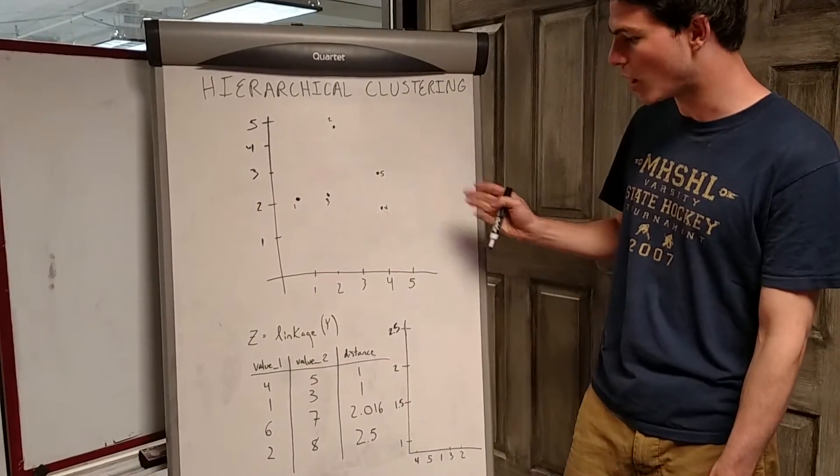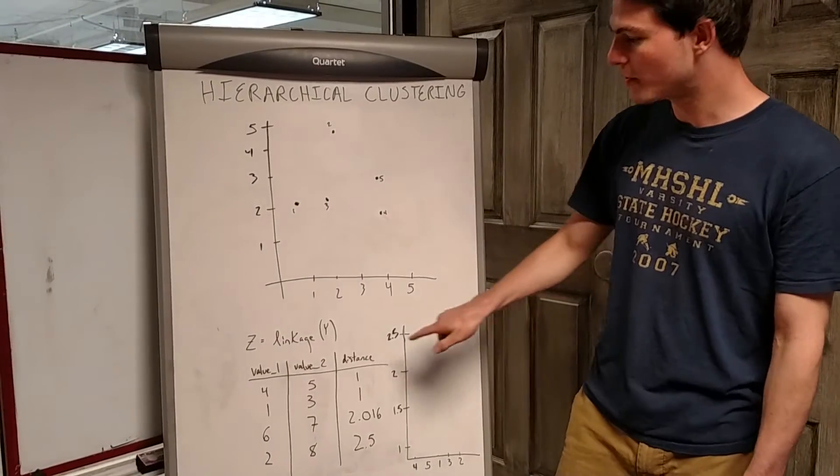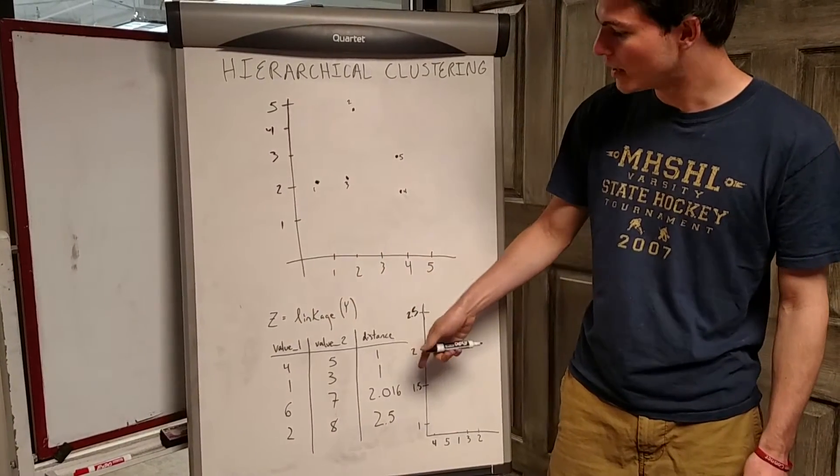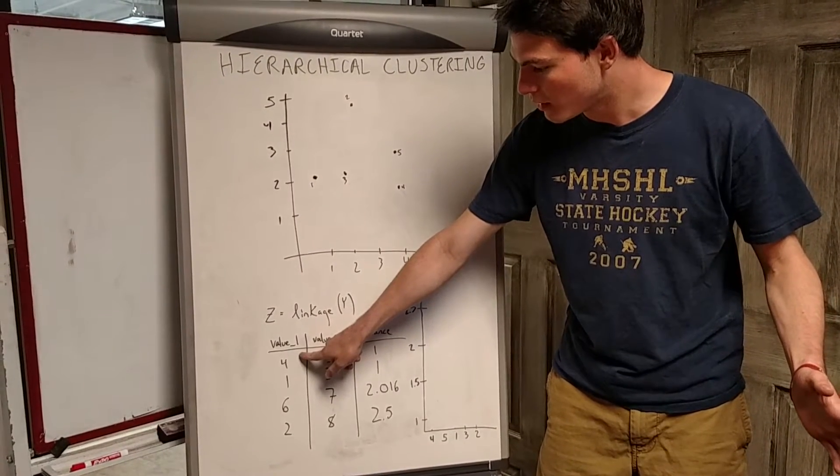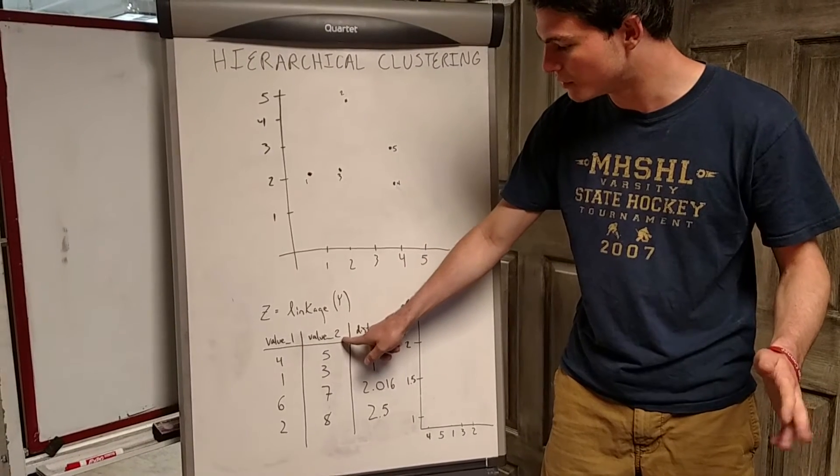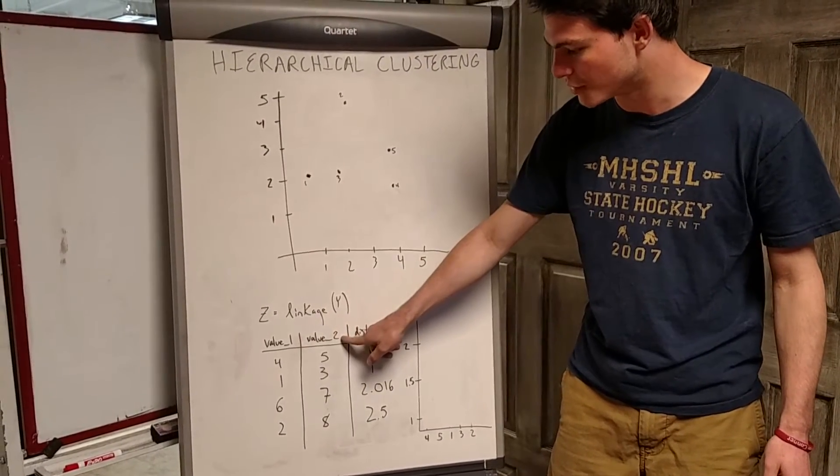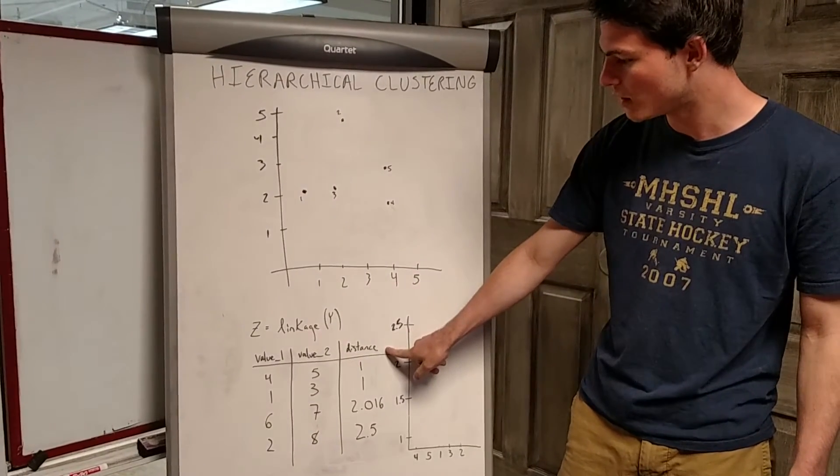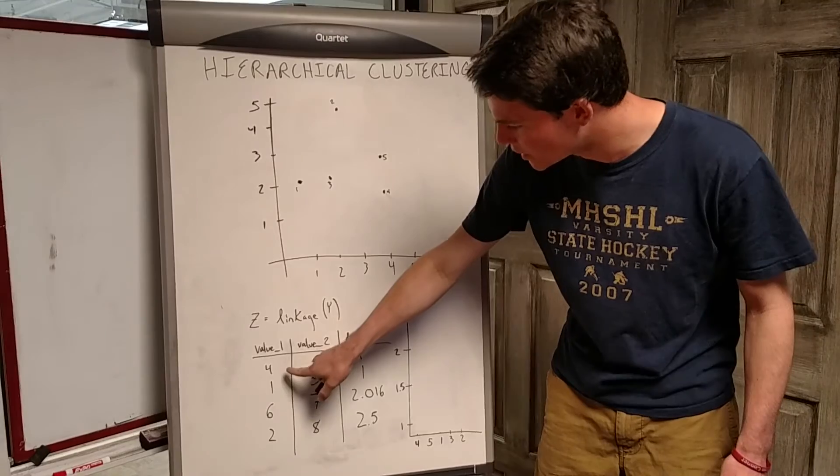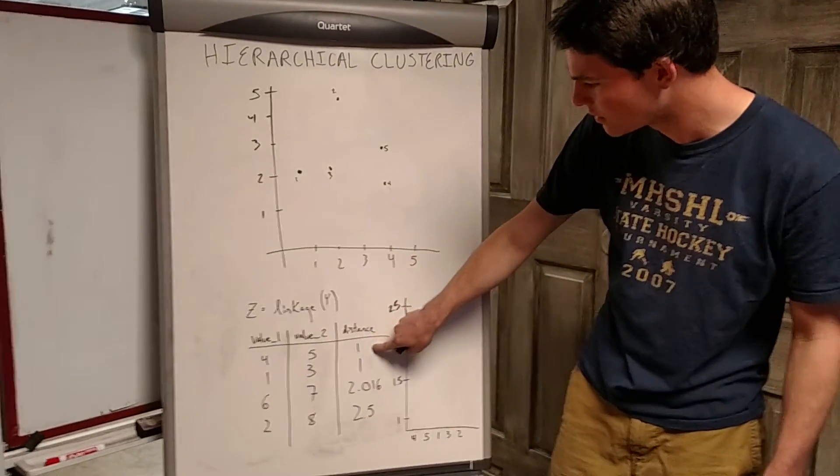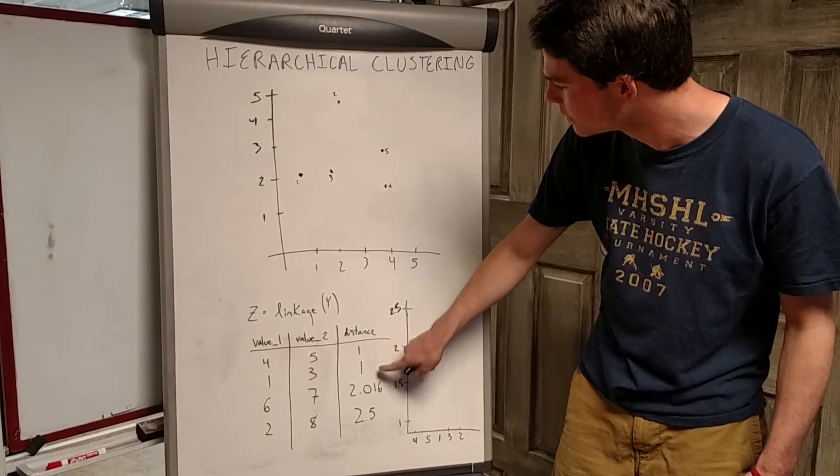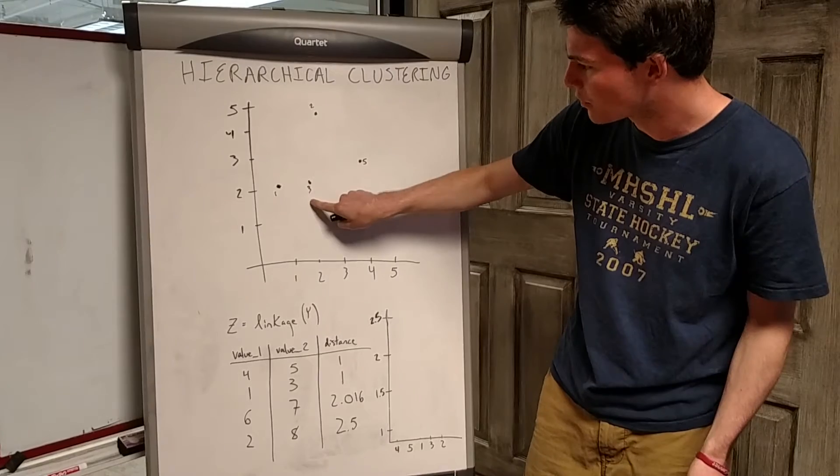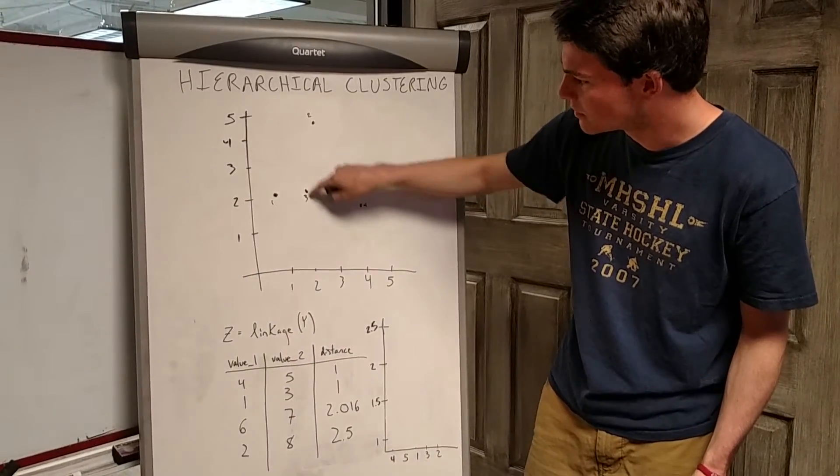Here I have my data set Y containing all these points. If I call linkage on Y, my output Z stores the linkage of Y. The first value shows how close value one is to value two, where value one is denoted in the first column, value two in the second column, and the distance between those points in the third column, the Euclidean distance. Here I've pre-calculated the distance between points four and five is one, and the distance between one and three is also one.